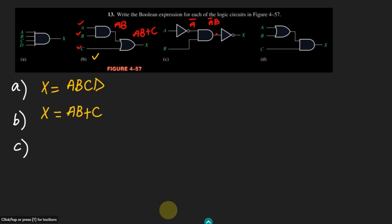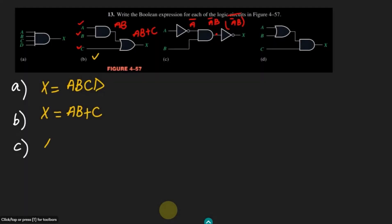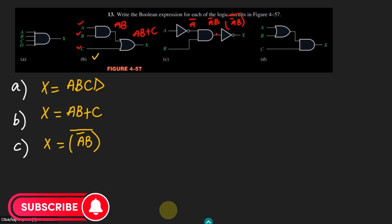Therefore the output here will be A prime and B, these two will be multiplied together. Once these are multiplied together, the output obtained from here will be given to this inverter here. So therefore we get A prime B whole complement. That is the value of x, so we can write x is equal to A prime B with the whole prime. We can see that it's very easy to find out the values if we divide them and obtain the outputs of each gate individually.